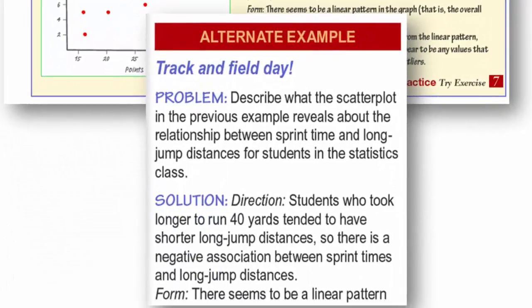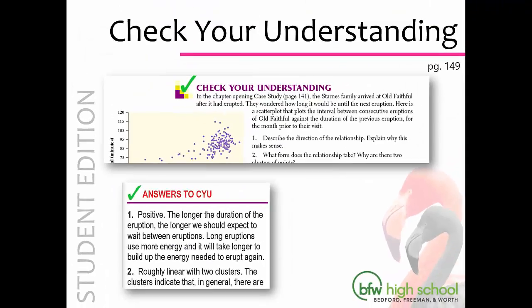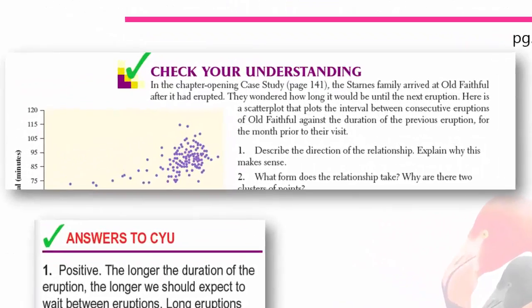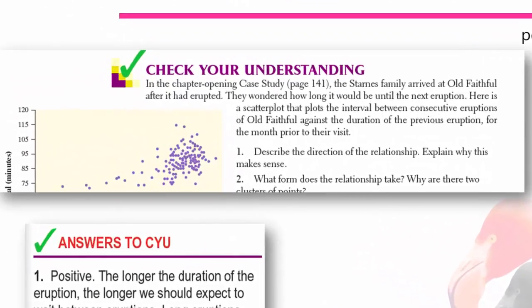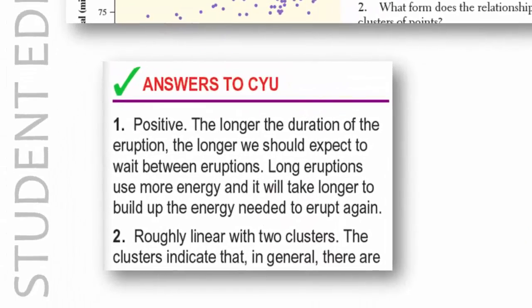In the Annotated Teacher's Edition, we provide you with an alternate example to teach in your classroom. Check Your Understanding is a stop sign for your students. As they are reading through the chapter, they will come across the Check Your Understanding boxes. Your students should read these and answer the questions to make sure they have understood everything studied in the chapter so far. We provide the answers to the Check Your Understanding boxes in the Annotated Teacher's Edition.